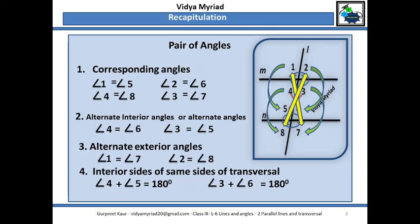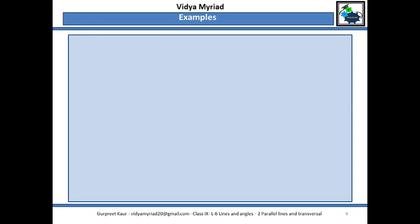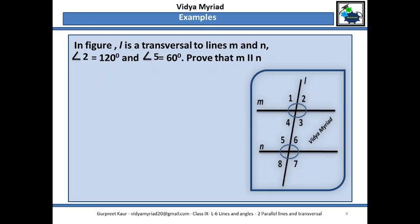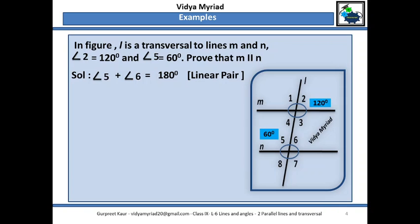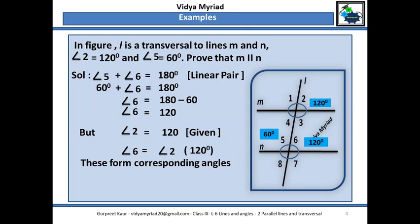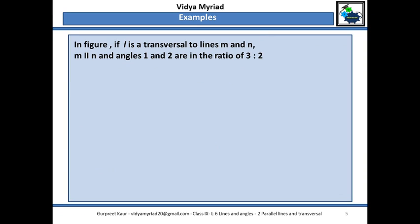Let us do some questions. Here, angle 2 is equal to 120 degrees and angle 5 is equal to 60 degrees. We need to prove that m is parallel to n. If I take angle 5 and angle 6, they are on a straight line, so their sum should be equal to 180 degrees because of the linear pair property. Since angle 5 is 60 degrees, angle 6 comes out to 120 degrees. Now angle 2 is 120 and angle 6 is also 120, so they are corresponding angles. When angle 2 is equal to angle 6, that means m is parallel to n.